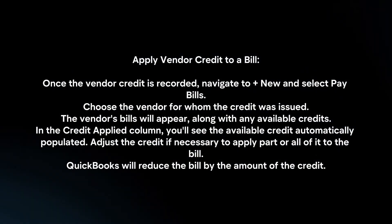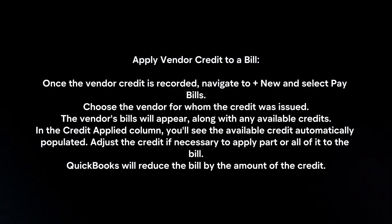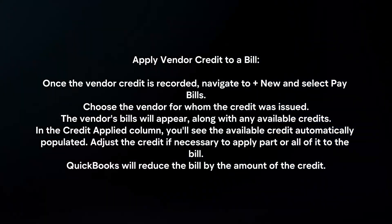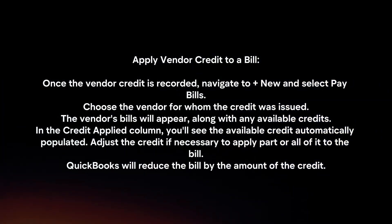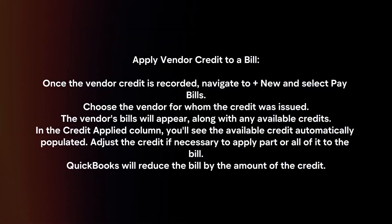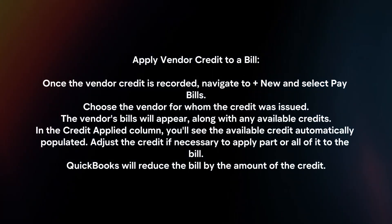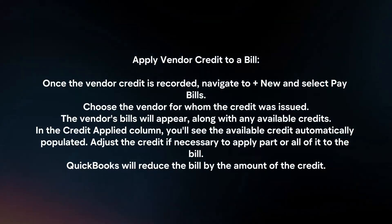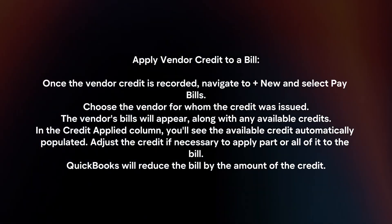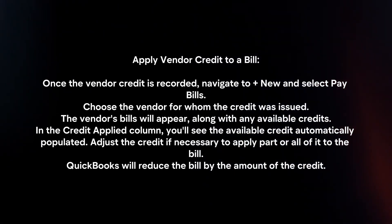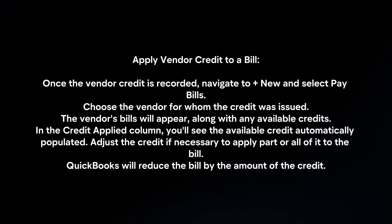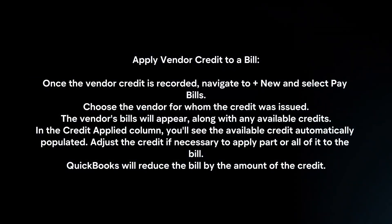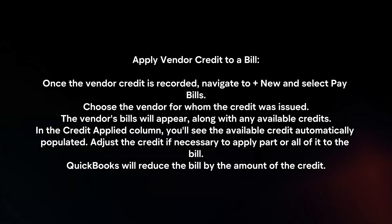Apply vendor credit to a bill. Once the vendor credit is recorded, navigate to plus new and select pay bills. Choose the vendor for whom the credit was issued. The vendor's bills will appear along with any available credits. In the credit applied column, you will see the available credit automatically populated. Adjust the credit if necessary to apply part or all of it to the bill. QuickBooks will reduce the bill by the amount of the credit.